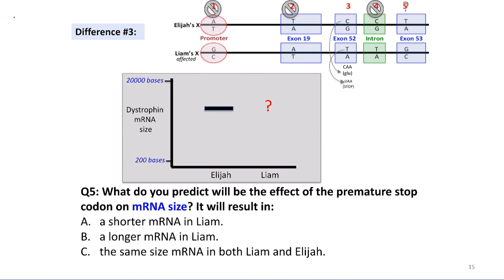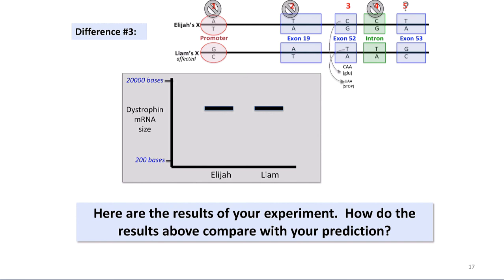Going back to the mRNA size question: since transcription is unaffected, we would hypothesize that we should have the same mRNA size in both Liam and Elijah. When we do the experiment, that is exactly what we see — both dystrophin mRNAs are the same size. This matches our prediction perfectly: because transcription is unaffected by premature stop codons, we see the same mRNA size in both brothers.